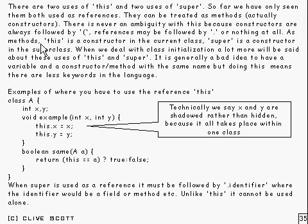Now as methods or constructors, I should say, this is a constructor in the current class and super is a constructor in the super class. And when we come to deal with class initialization shortly, I'll go into a lot more detail about this.